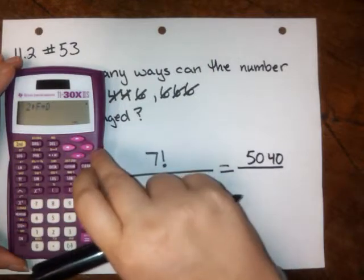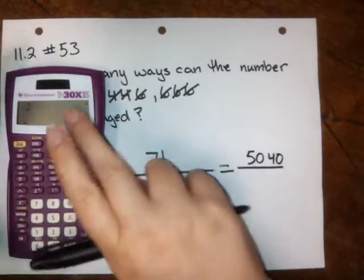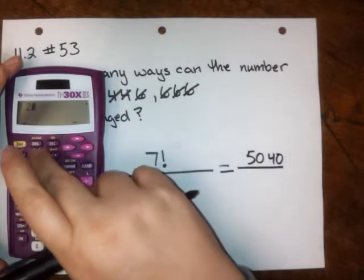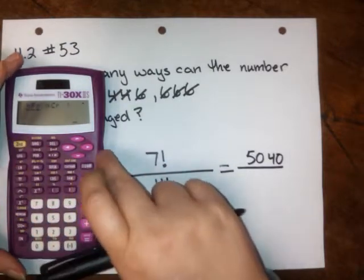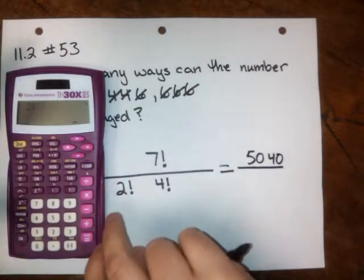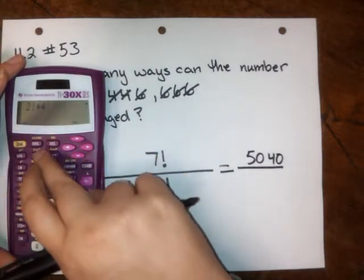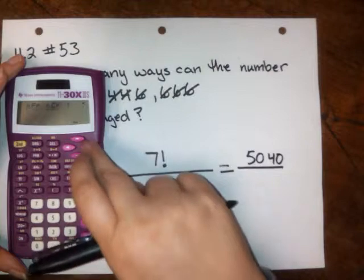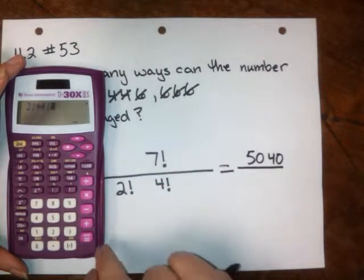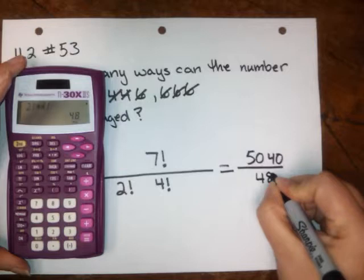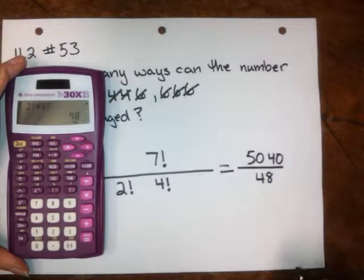And two factorial. Remember, we said you don't even really have to use the factorial button for two. I'm gonna do it now. Two factorial, it's the same as two. Times four factorial, and that gives me 48 in the denominator.